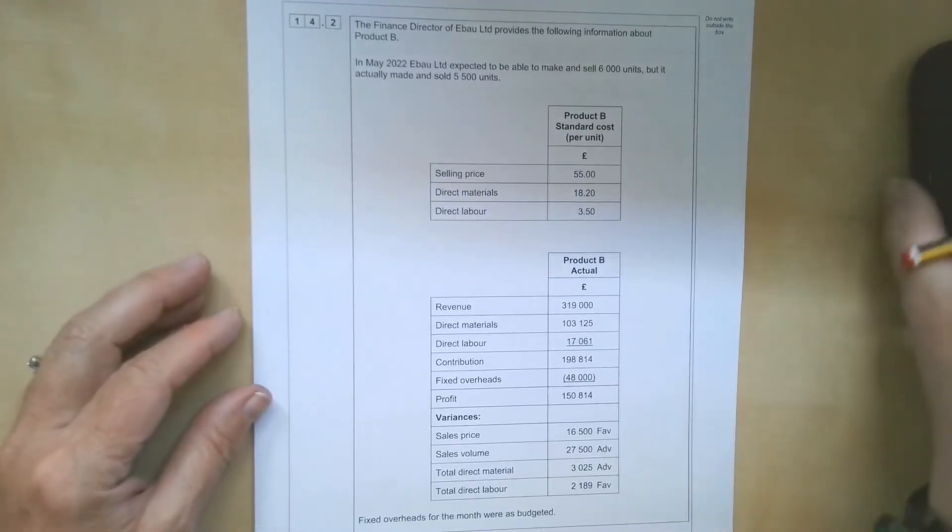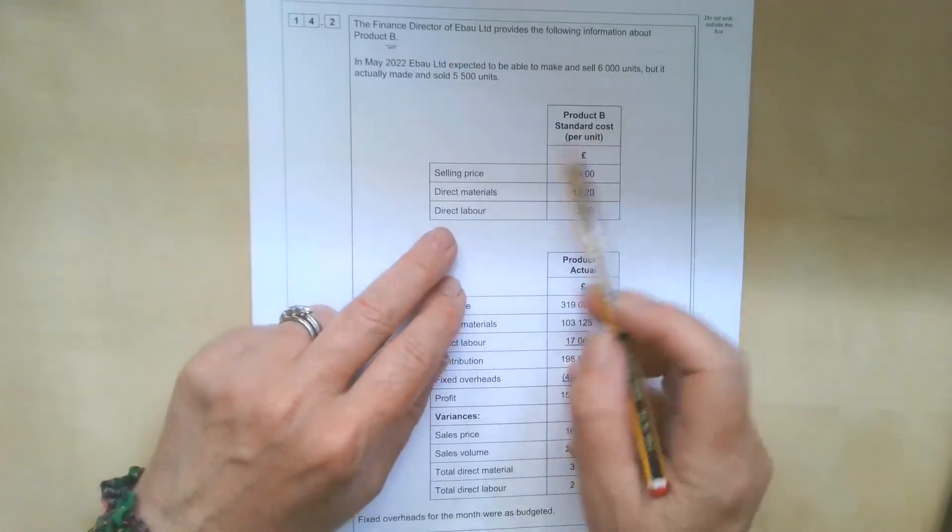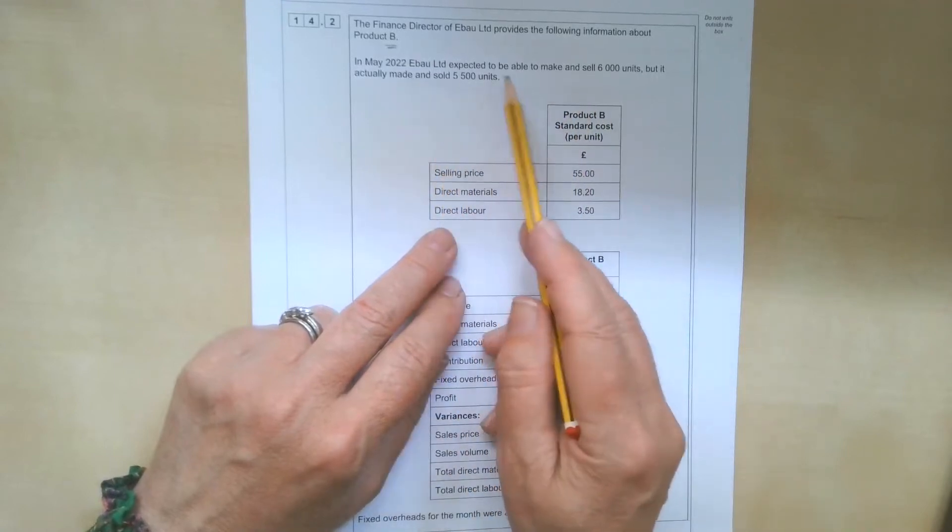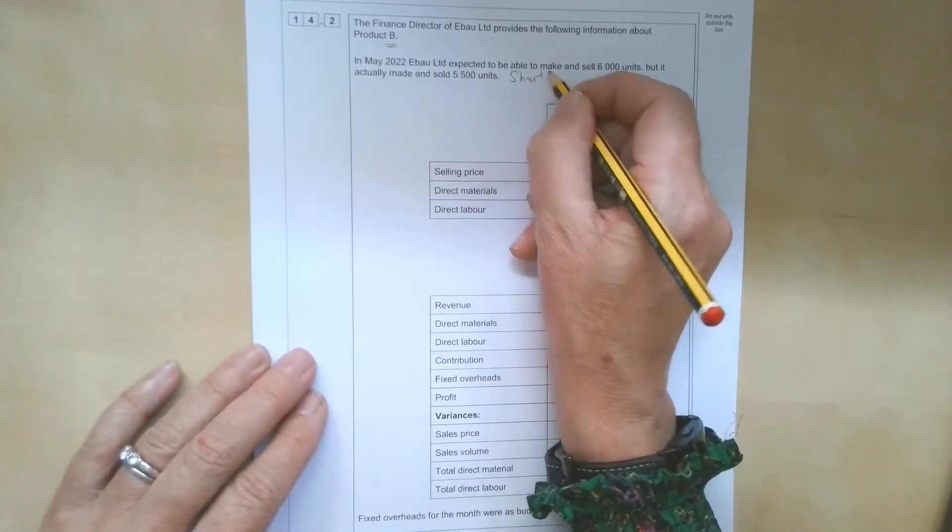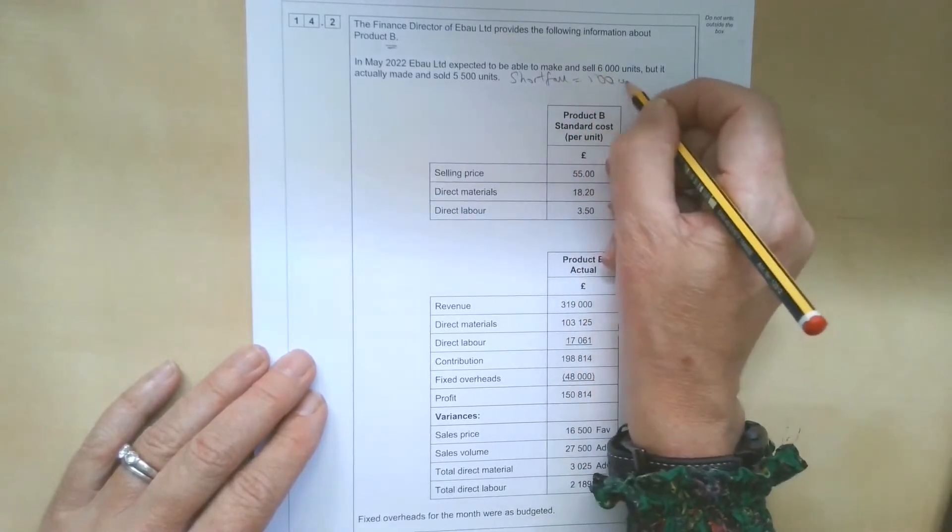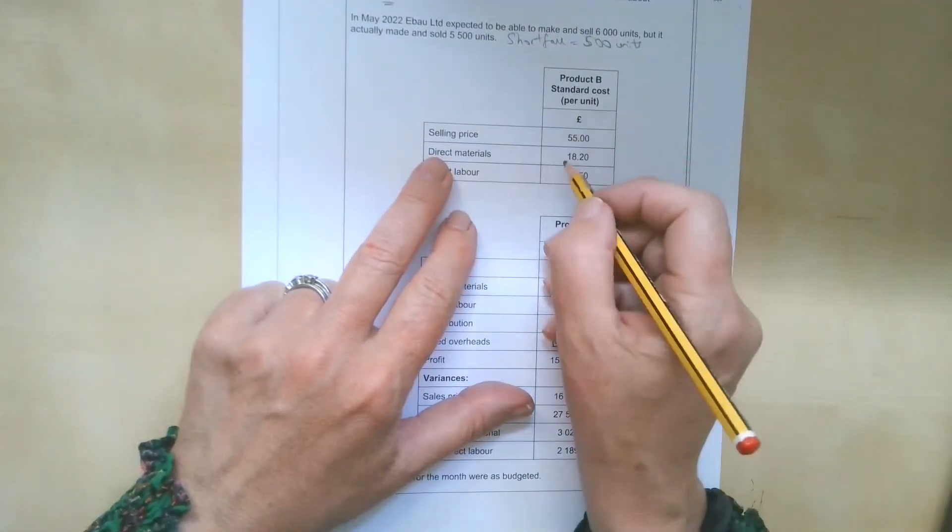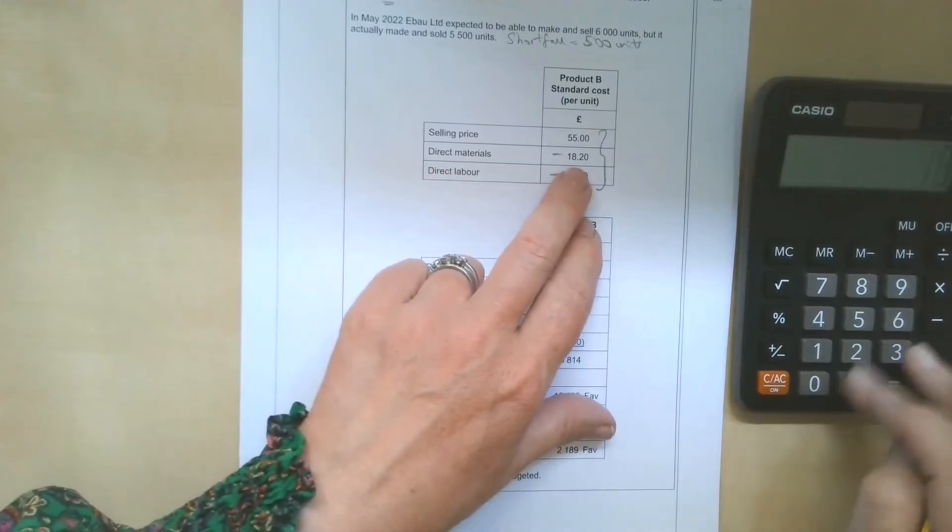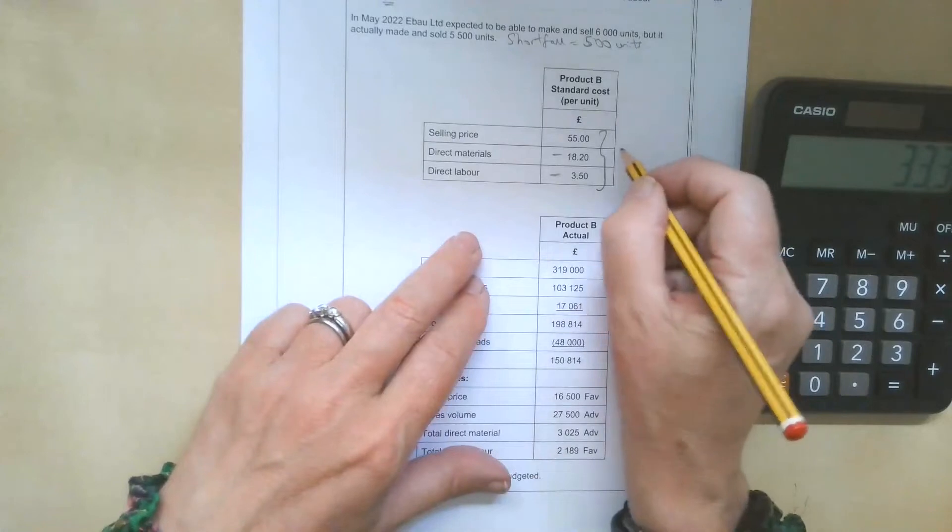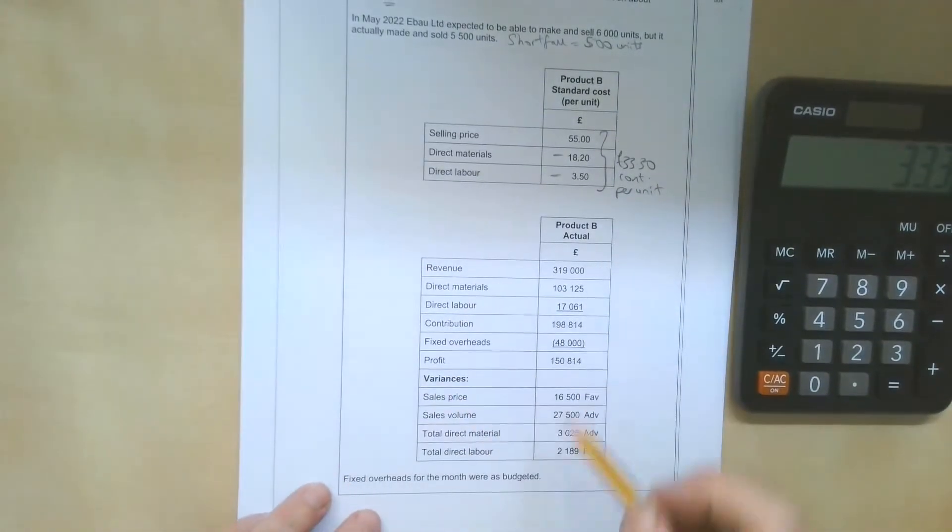Now on to part two of the question. So the finance director provides the following information about product B this time. We can ignore everything we've just done for product A. This is all based on product B. In May, they expected to make and sell 6,000 units. They actually only made and sold 5,500 units. So we've actually got a shortfall there of 500 units. We've got some information about the standard cost per unit, the selling price, direct materials, and direct labour. If we take one away from the other, the contribution per unit is £33.30.